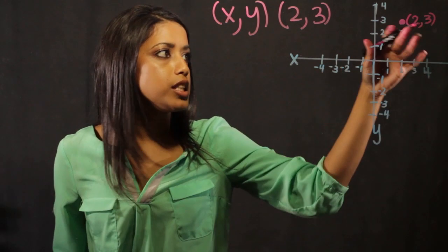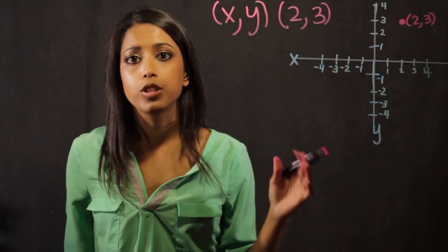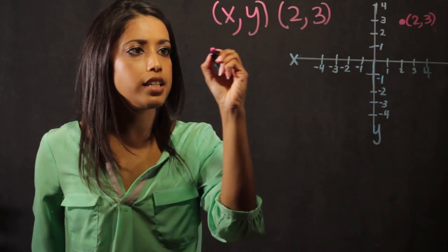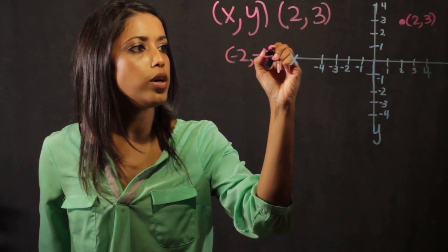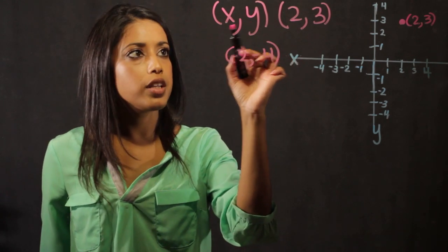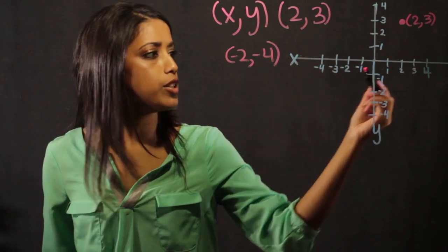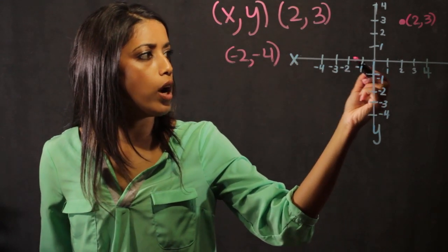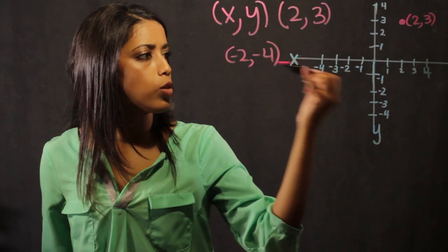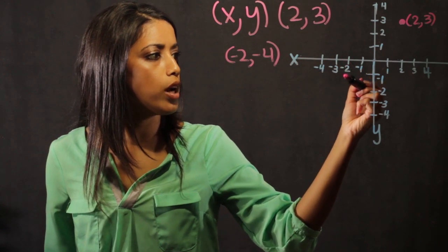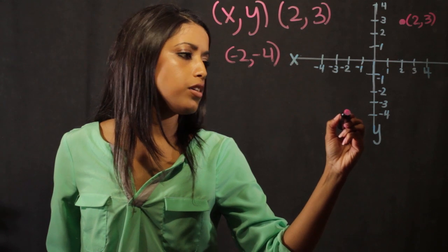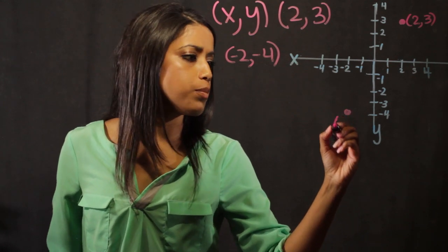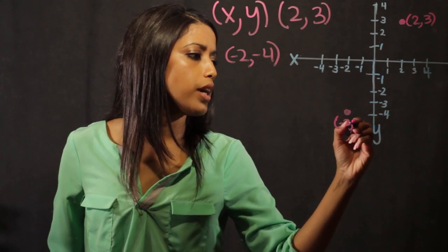Ordered pairs can be in the positive realm, which is going to be over here. They can also be negative. So let's take the example minus two comma minus four. So again, we look at the x-y. The x value is minus two. So we count down one, two. And then on the y, it's minus four. So we go one, two, three, four. So we're right here. This ordered pair is minus two comma minus four.